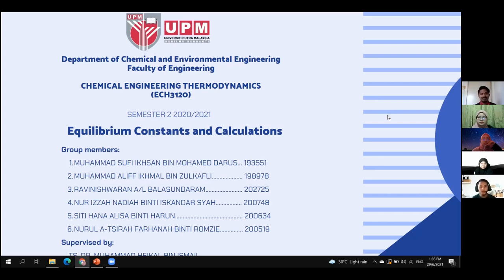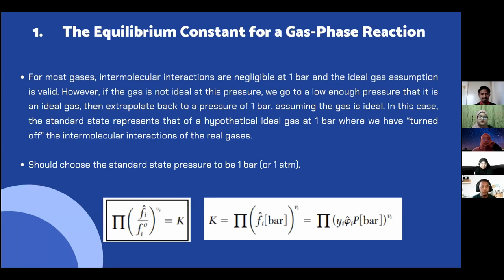For the first section, we are discussing the equilibrium constant for gas phase reaction. For most gases, intermolecular interactions are negligible at one bar and the ideal gas assumption is valid. However, if the gas is not ideal at this pressure, we go to a low enough pressure that it is an ideal gas, then extrapolate back to a pressure of one bar, assuming the gas is ideal. In this case, the standard state represents that of a hypothetical ideal gas at one bar where we have turned off the intermolecular interaction of the real gases. We should choose the standard state pressure to be one bar.